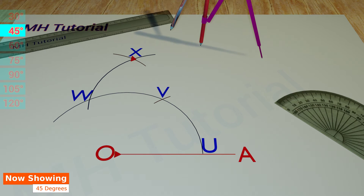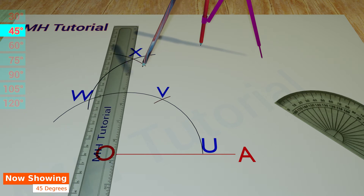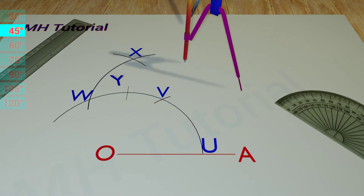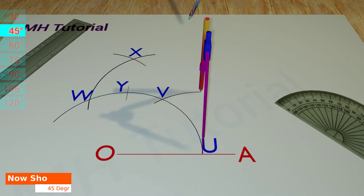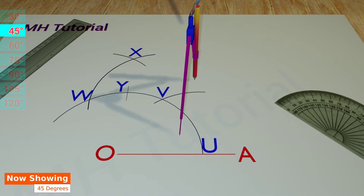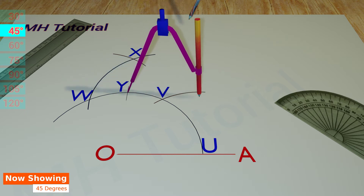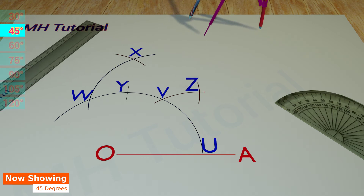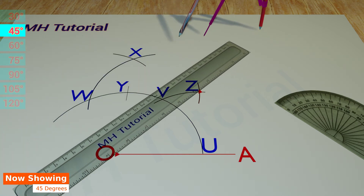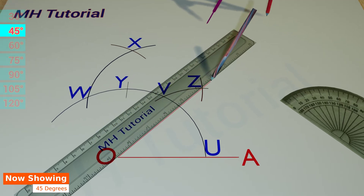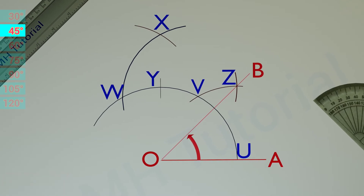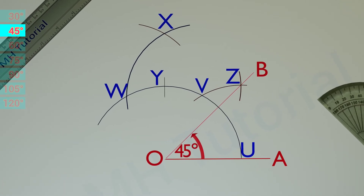Then, align the ruler about point O and point X. A small line is drawn to get a point of intersection against the first circle arc. The point is named Y. Then, two circle arcs of same radius are drawn from point U and point Y respectively. These two arcs meet at point Z. Finally, with the help of a ruler and a pencil, point Z and point O are connected. This is the line segment OB. Hence, angle AOB is a 45 degrees angle.